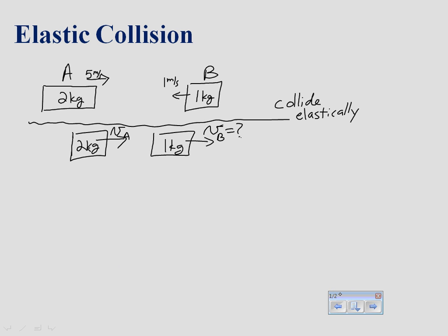In this example problem we're looking at elastic collisions. Elastic collisions are one of the two types of collisions. There are inelastic collisions where all you know is that the momentum of the system stays constant, and there are elastic collisions where not only is momentum conserved but also the kinetic energy of the system stays constant.